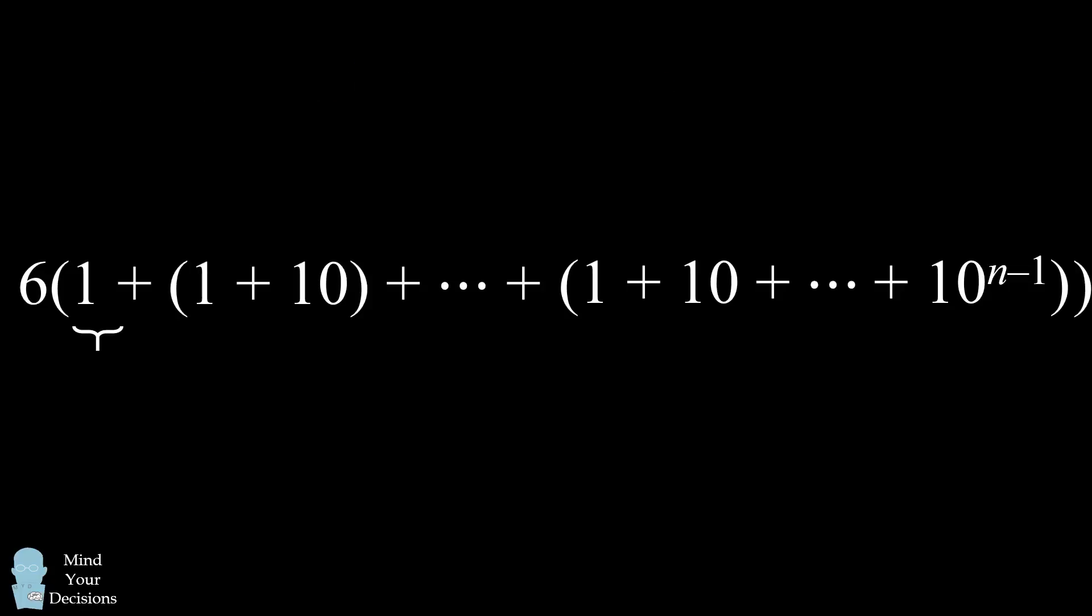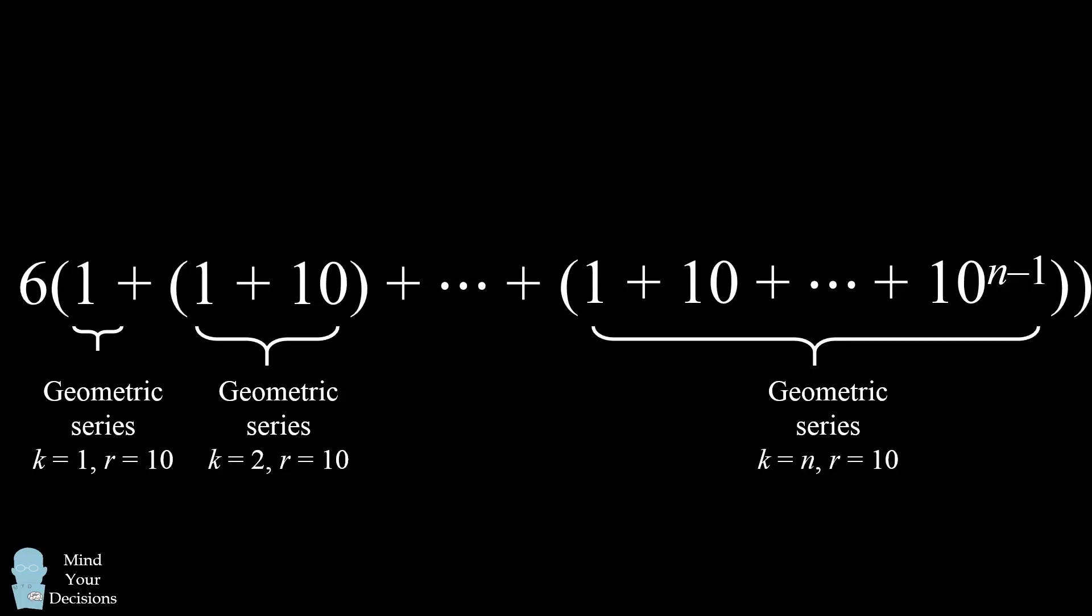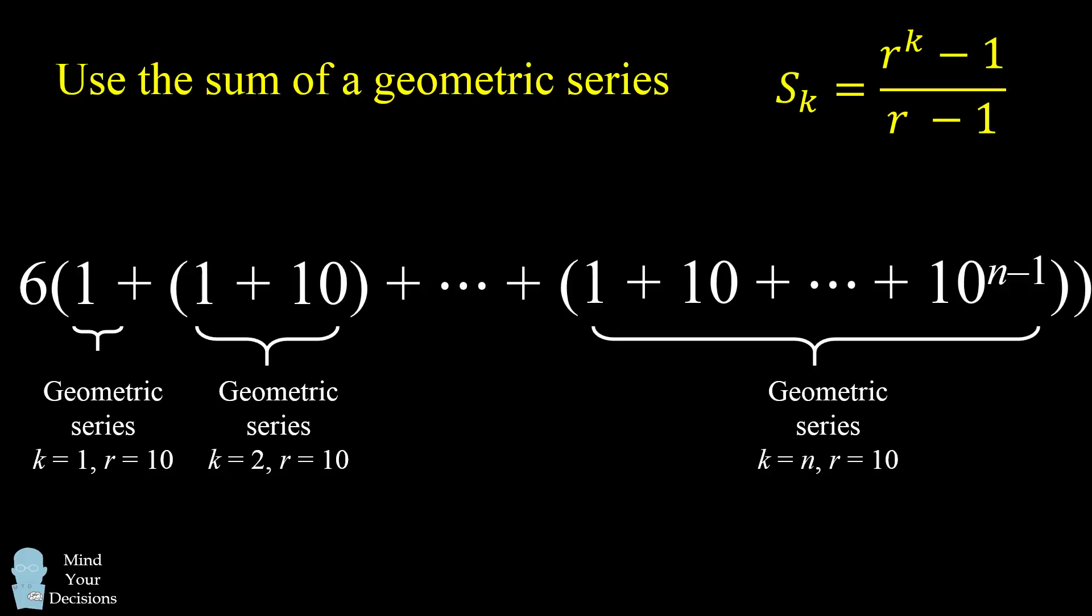Now we notice a pattern in this summation. Each of the parenthetical terms will be a geometric series with a common ratio 10 and a different parameter with a different number of terms. So we can now use the formula for the sum of the geometric series for each of these groups.